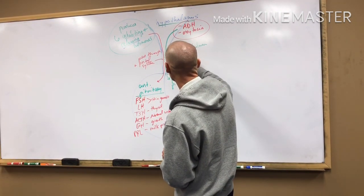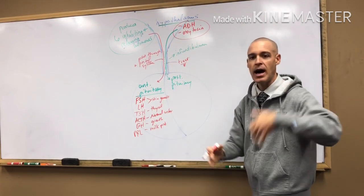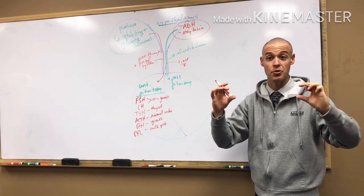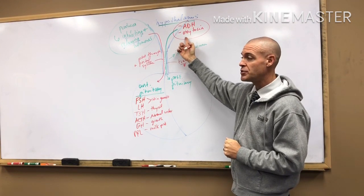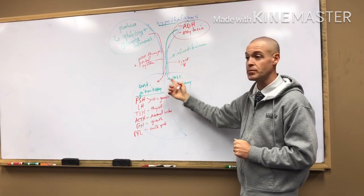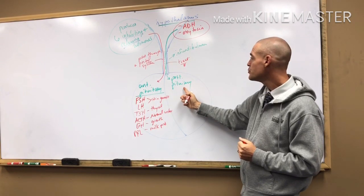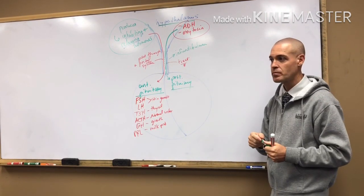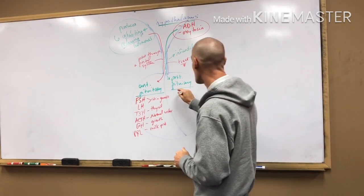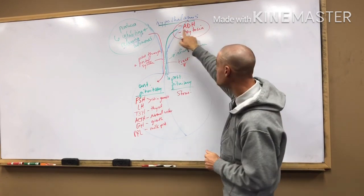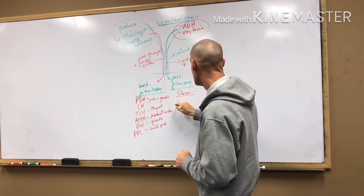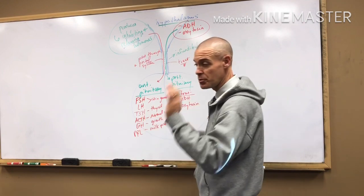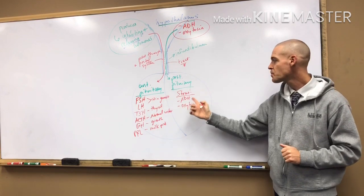ADH and oxytocin go through a tract — the hypothalamo-hypophyseal tract — which is a nerve pathway, since these are neuroendocrine hormones. They travel through the tract to the posterior pituitary. The posterior pituitary does not produce any hormones; it stores these two. So all these two do is travel through the tract, get stored, and get released when necessary by the posterior pituitary — which stores and releases ADH and oxytocin.